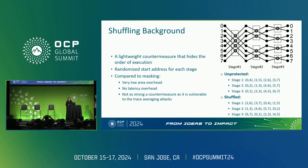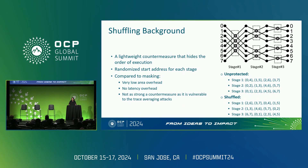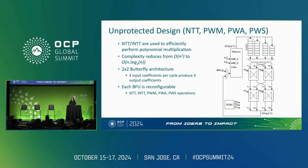Another type of countermeasure is shuffling. Instead of modifying inputs, you modify the order of execution. On the right is a data flow diagram for an NTT operation. In an unprotected design, stage one operates on input pairs 0,4 then 1,5 then 2,6 and 3,7. With shuffling enabled, that order can be randomized — for example, 2,6 then 3,7 then 0,4 then 1,5. Compared to masking, shuffling is very lightweight: low area overhead, no latency overhead from the arithmetic side, and no memory overhead. However, it is not as strong as masking and is still vulnerable to trace averaging attacks.